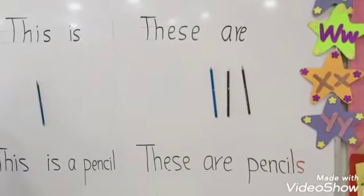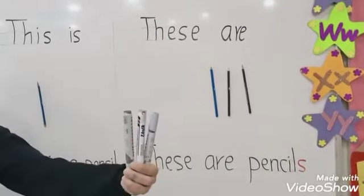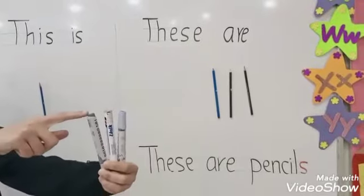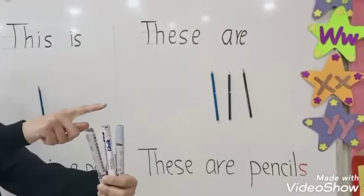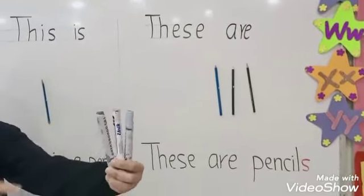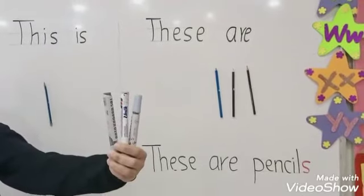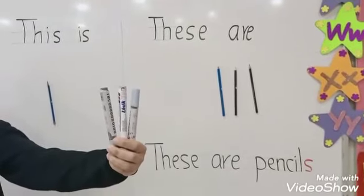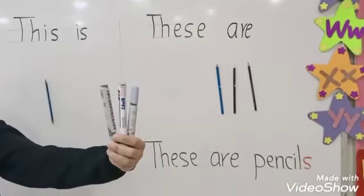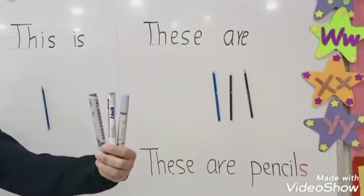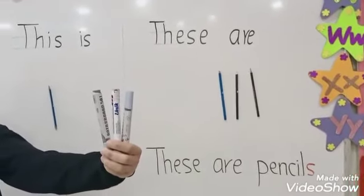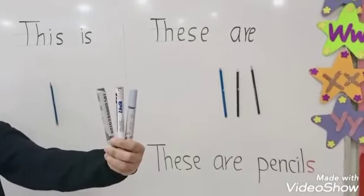How many markers do I have? One, two, three. One or more than one? More than one. Very good. So I say, these are markers. These are markers.